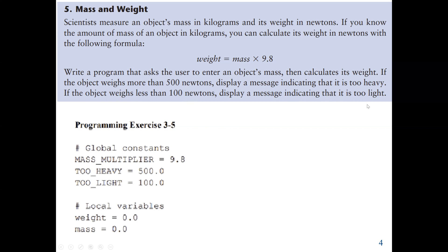This is the area we are covering in Chapter 3. In Chapter 2 we covered input, process, and output, and that's what we are going to do here. We ask the user to enter the mass, convert it to float or int, then calculate the weight. Using our selection statement, if the weight is greater than 500 newtons, we say it's too heavy. If it's less than 100, we say it's too light. Let's start the program.